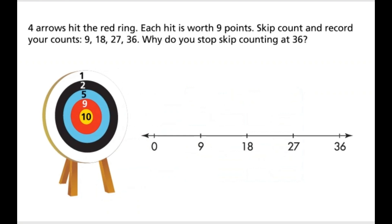4 arrows hit the red ring. Each hit is worth 9 points. Skip count and record your counts: 9, 18, 27, 36. Why do you stop skip counting at 36?